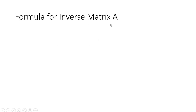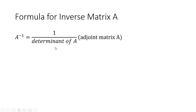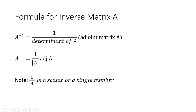The formula for an inverse matrix A has two parts: 1 over the determinant of A, multiplied by the adjoint matrix of A. Remember that the determinant is just a scalar number, so 1 over the determinant is simply a scalar or a single number.